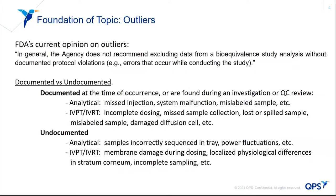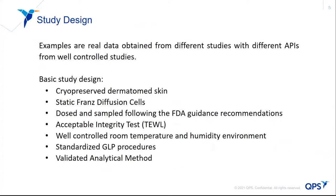You may have incorrectly put your samples in the analytical tray without realizing it, or there's a power fluctuation, or there's damage to the skin while dosing, or most likely physiological differences in stratum corneum — as no two skin sections are identical, you could have side-by-side sections with entirely different permeation characteristics. The data being presented came from well-controlled design studies where we can generally assume it was not the study conduct that caused the problem, but rather the skin itself or the product.